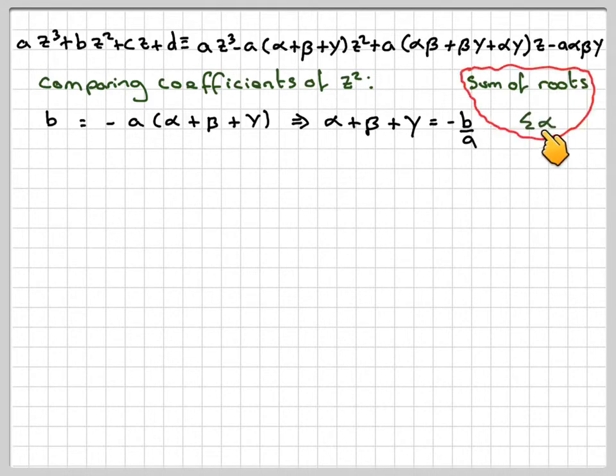There's a little shorthand for that so you don't have to keep writing this out. It's sigma alpha, and that means the sum of the roots.